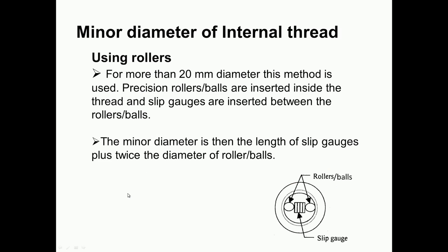The second method uses rollers or balls, and is used when the screw thread diameter is more than 20 mm. Precision rollers or balls are inserted inside the thread, and slip gauges are inserted between the rollers or balls. The minor diameter is calculated by adding the diameter of the two rollers plus the slip gauge width between them.